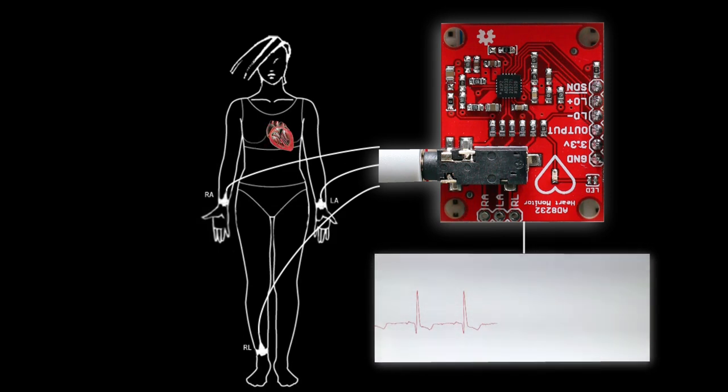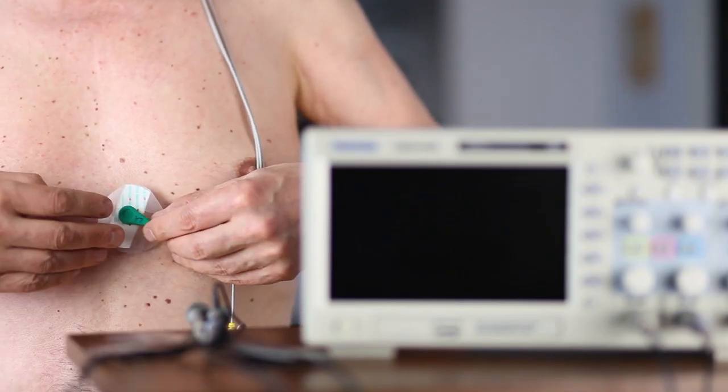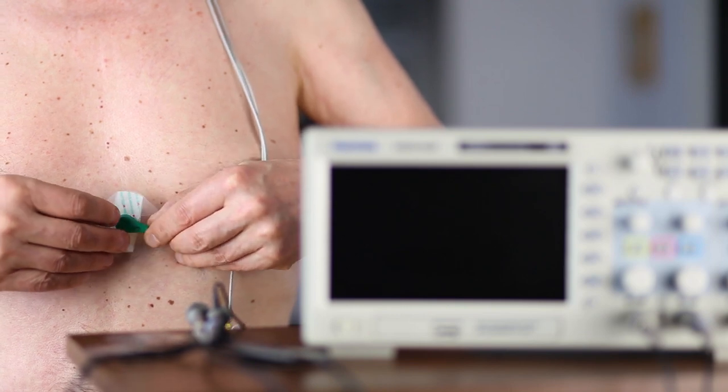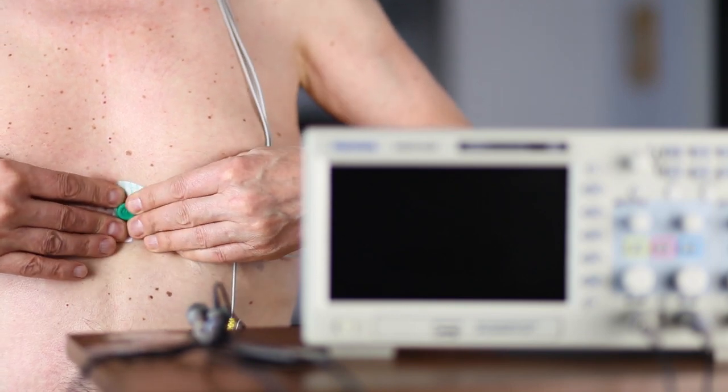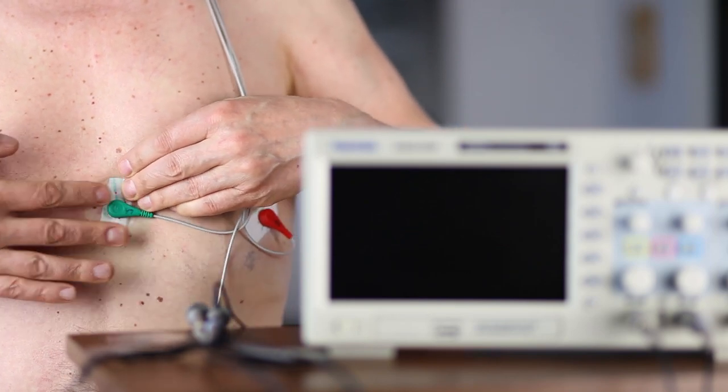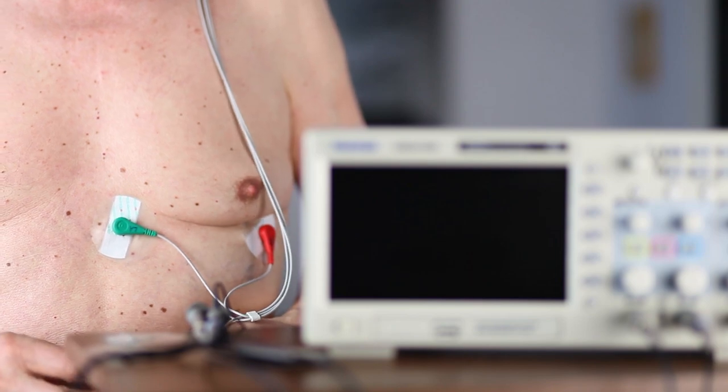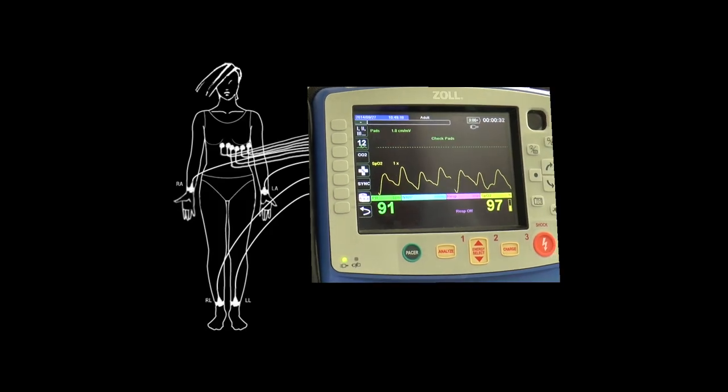This is attributed to the slow electrochemical nature of ionic transport in living cells. The electrodes placed on the patient's body detect the small changes of electric potentials on the skin that arise from the heart muscle depolarizing during each heartbeat.